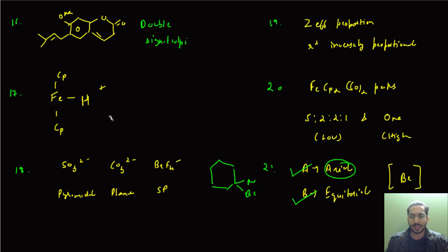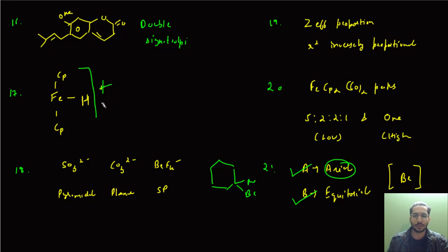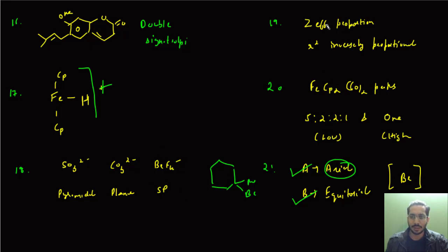From organometallic chemistry, there was a simple question where a ferrocene sandwich compound was given and H₂SO₄ was added. A hydrogen will attach to the iron and a positive charge will be generated on the complex — it follows the 18-electron rule, and that is the correct answer. Then there was a question on VSEPR theory: SO₃²⁻ is trigonal pyramidal, CO₃²⁻ is trigonal planar, and BrF₄⁻ is square planar.